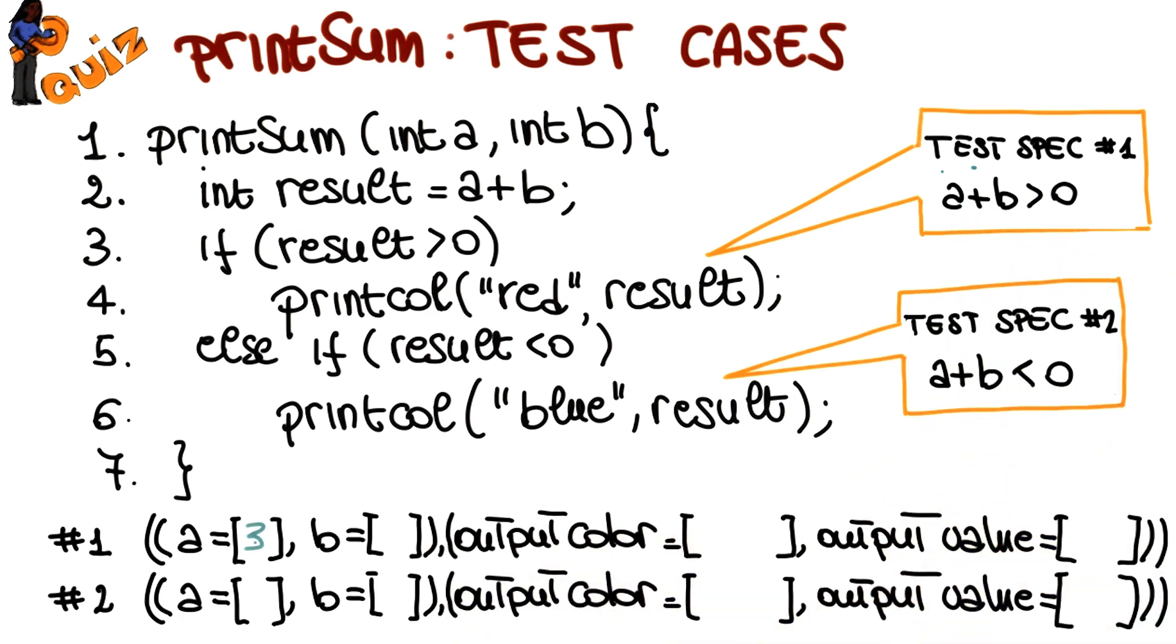So for example, we could pick value 3 for A and value 9 for B. Those satisfy the specification because A plus B is equal to 12 and therefore is greater than 0, and therefore this is a test case that implements this test specification.